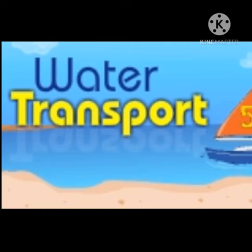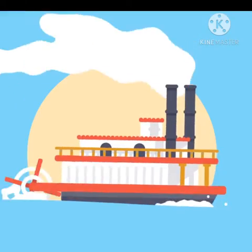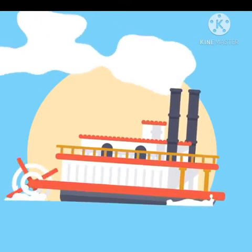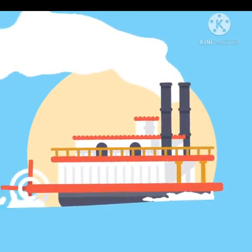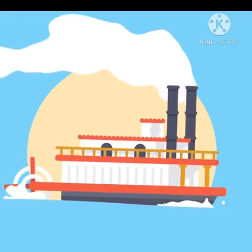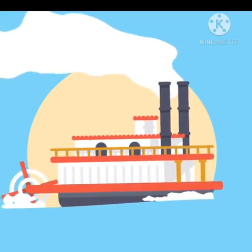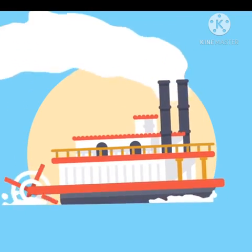Water transport: vehicles that sail in water are means of water transport. Ships and boats are common means of water transport. A boat is mostly used in shallow water. A motor boat can also be called a power boat because it goes very fast on the water.